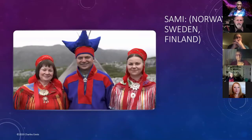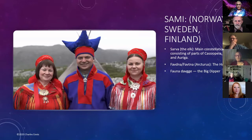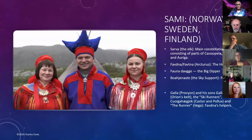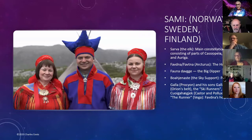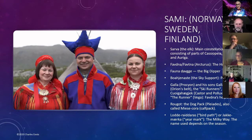The Sami people of Norway, Sweden, and Finland have a quite different sky. They've got the elk, Sarva — a main constellation taking up parts of three of our constellations. They have the hunter, Favdna, who has to be very careful not to shoot his arrow at the sky support — Polaris — or the sky will fall. The Big Dipper is Favdna's bow. They have the Boajanhoahtse, the sky support, which is Polaris. Galla, the star Procyon, and his sons the Gallabardn are Orion's belt. The ski runners are Castor and Pollux. Vega is the runner. The Pleiades is a dog pack or calf pack, and the Milky Way is the bird path of the year mark. The elk's antlers are the bent W of Cassiopeia.